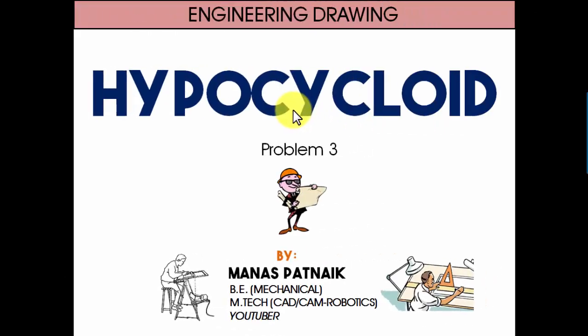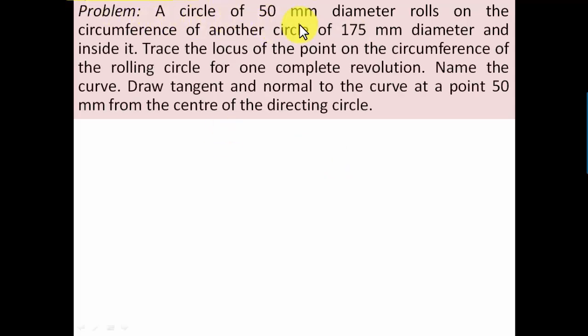Hi there guys, this is your friend and tutor Manas Patnaik. I'll be taking this lecture series ahead based on cycloidal curves, and today the problem I'm going to deal with is based on hypocycloid — problem number three in this series. Here it comes: a circle of 50mm diameter rolls on the circumference of another circle of 175mm diameter, inside it. Trace the locus of the point on the circumference of the rolling circle for one complete revolution.